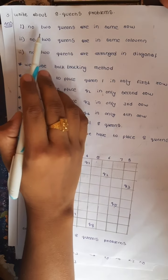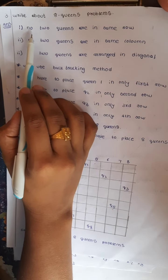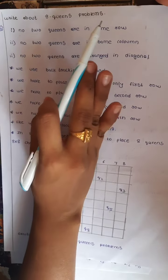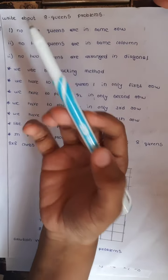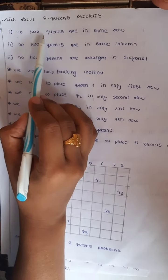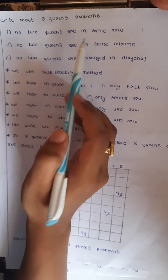In the 8 Queens Problem, we have to follow 3 rules. The 3 rules are: no 2 Queens are in the same row.